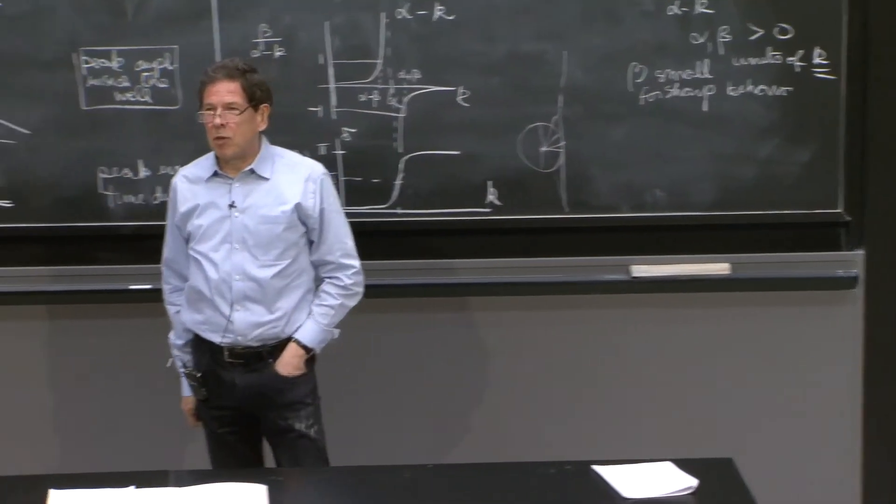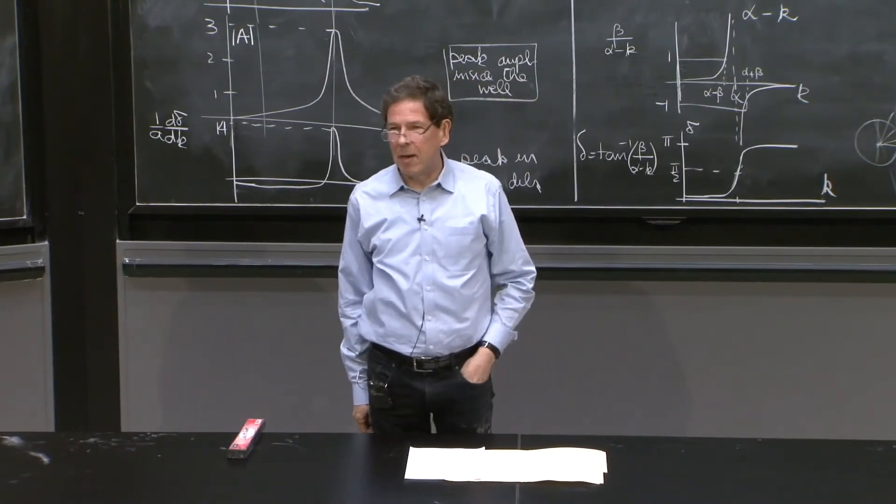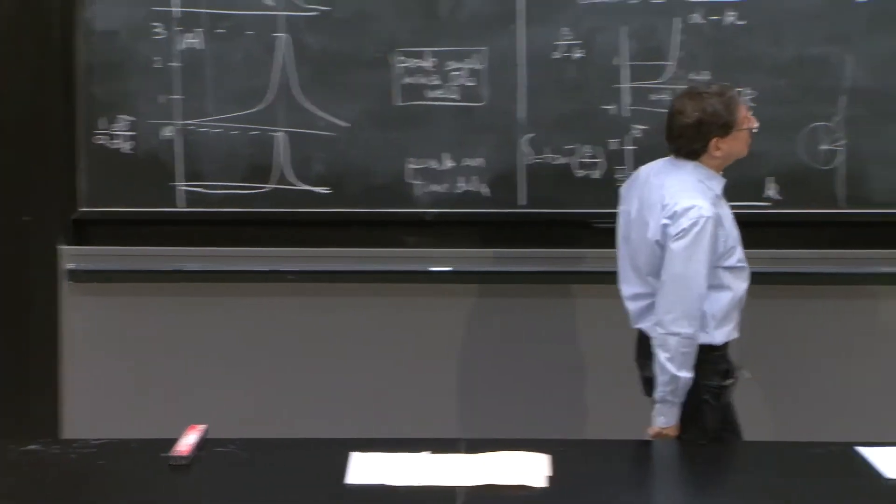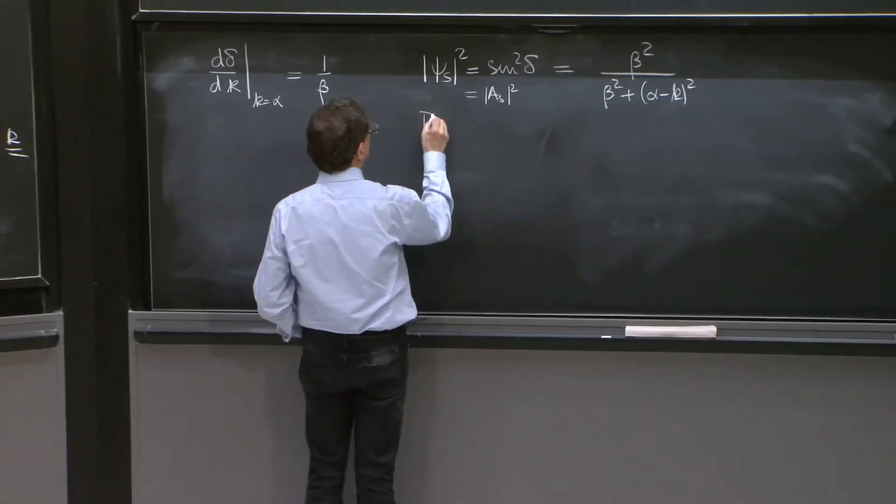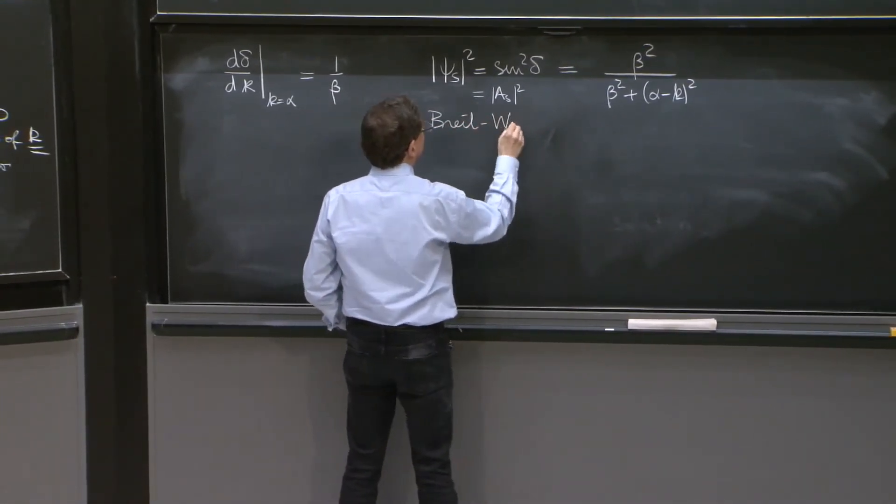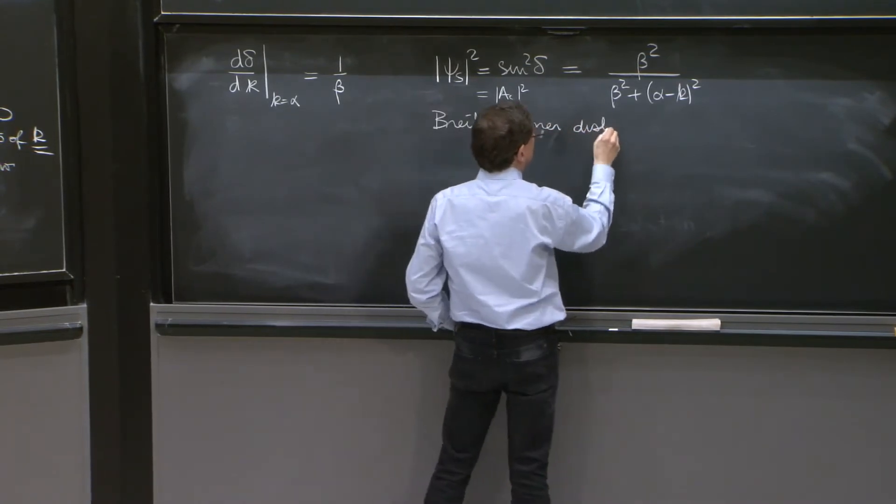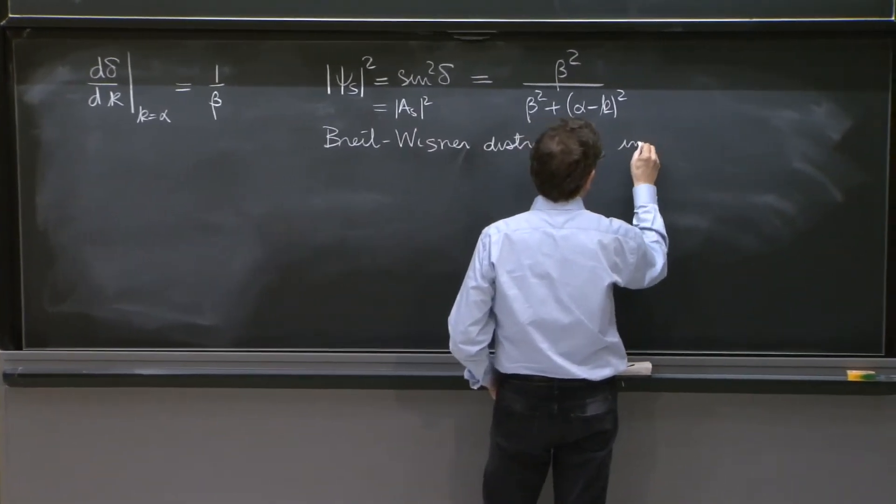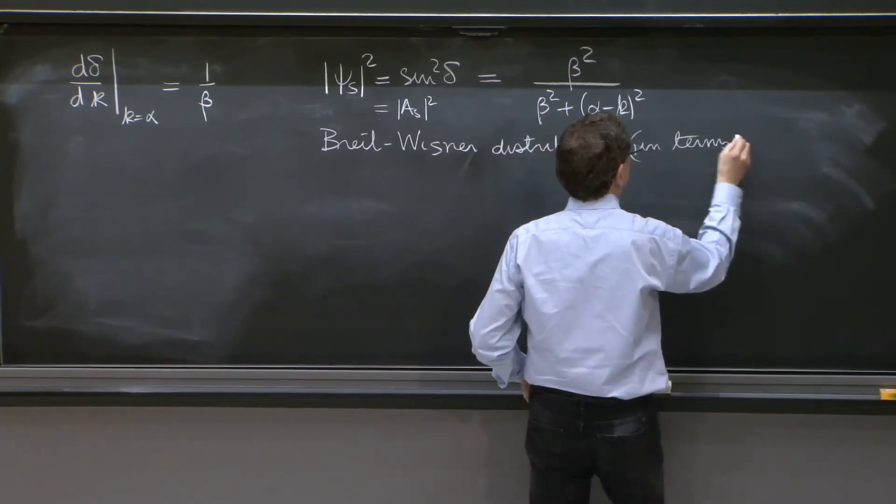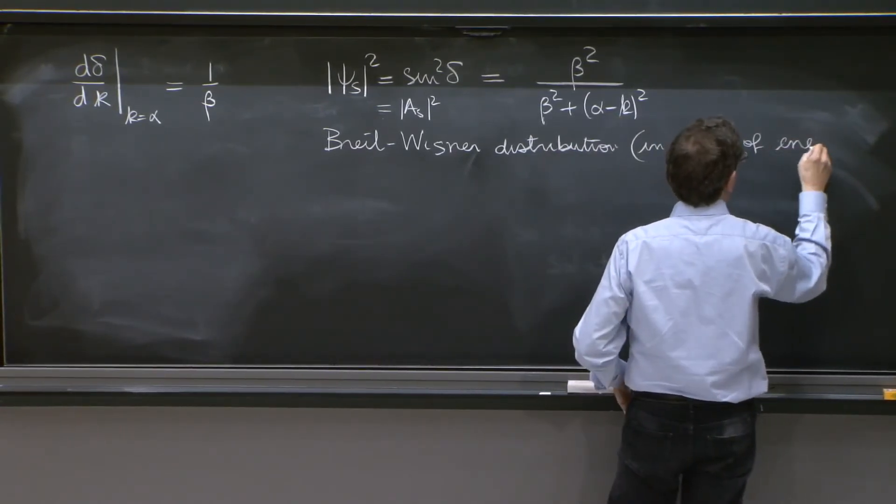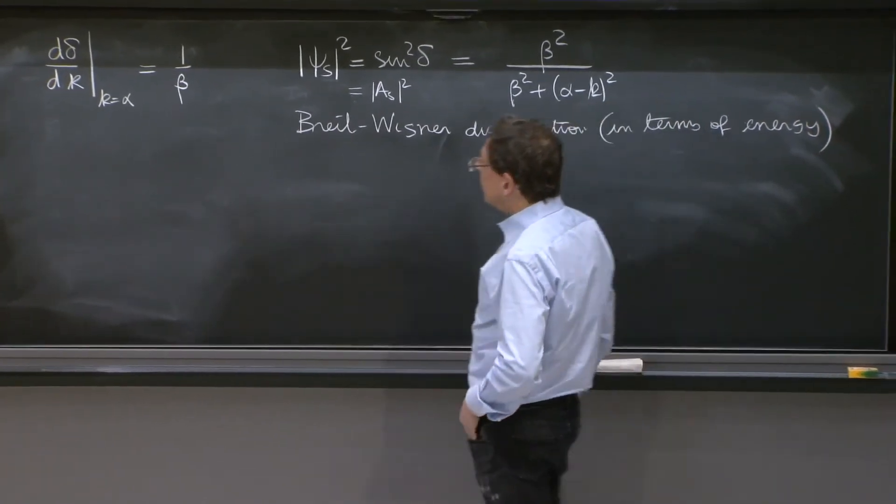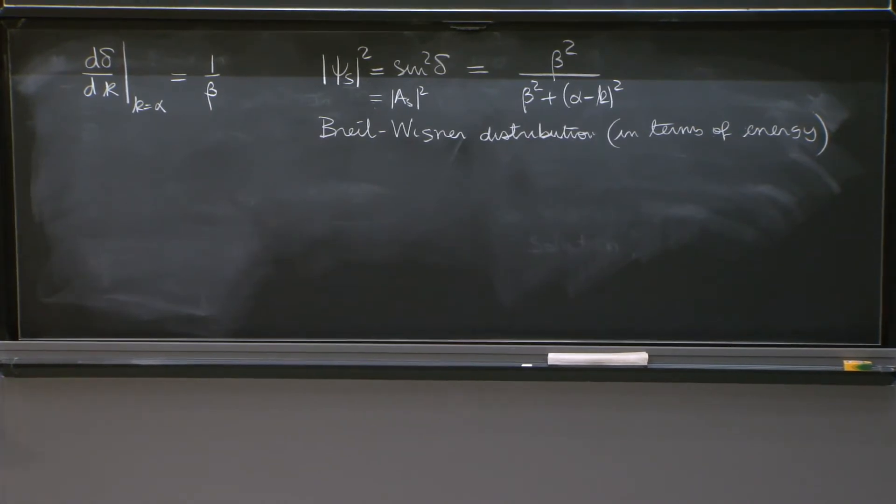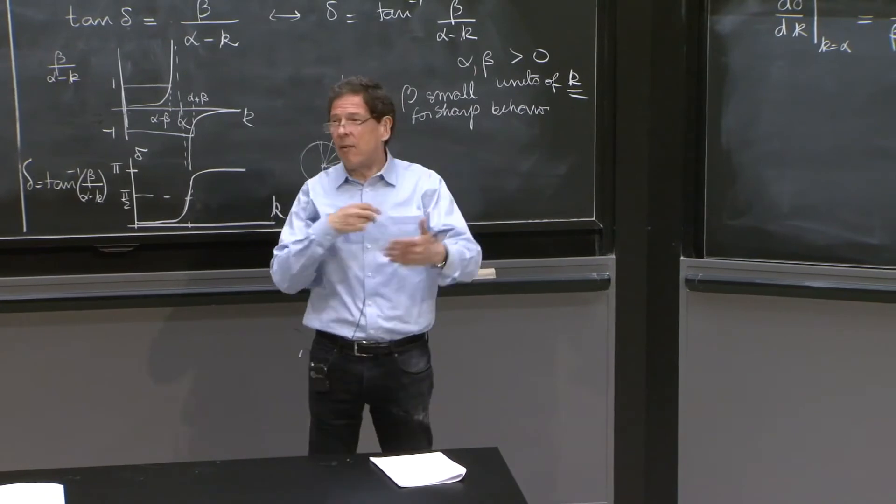Now, this distribution is so famous that has been given a name. It's called the Breit-Wigner distribution. And it's usually referred in terms of energy, not momentum.